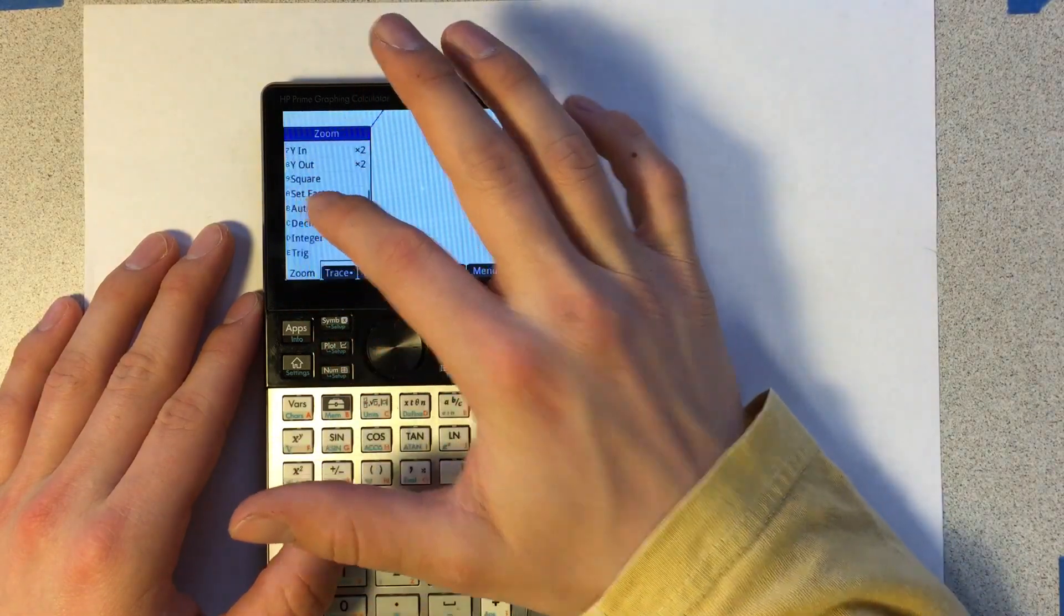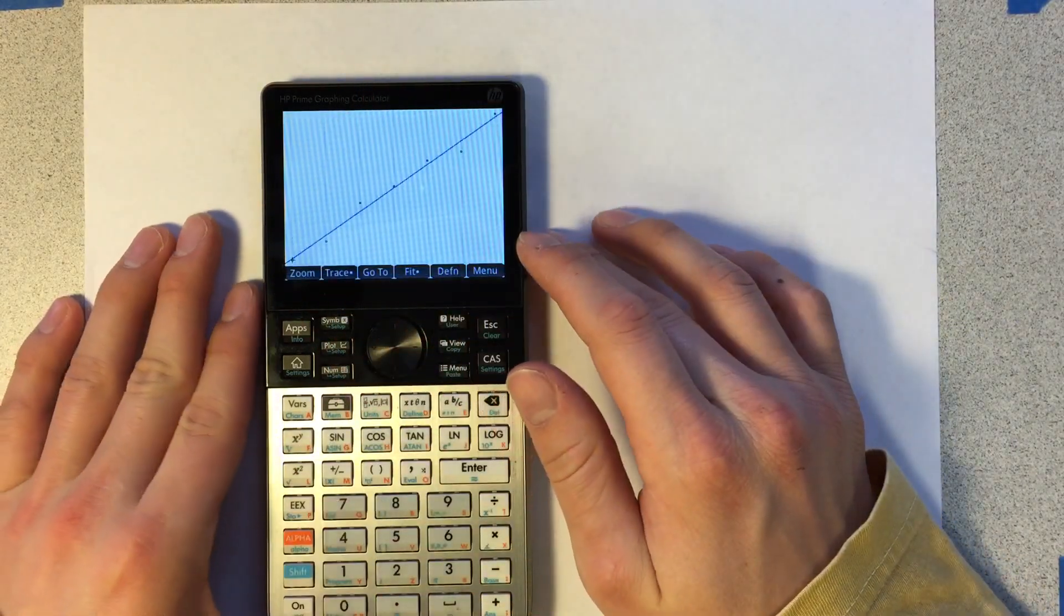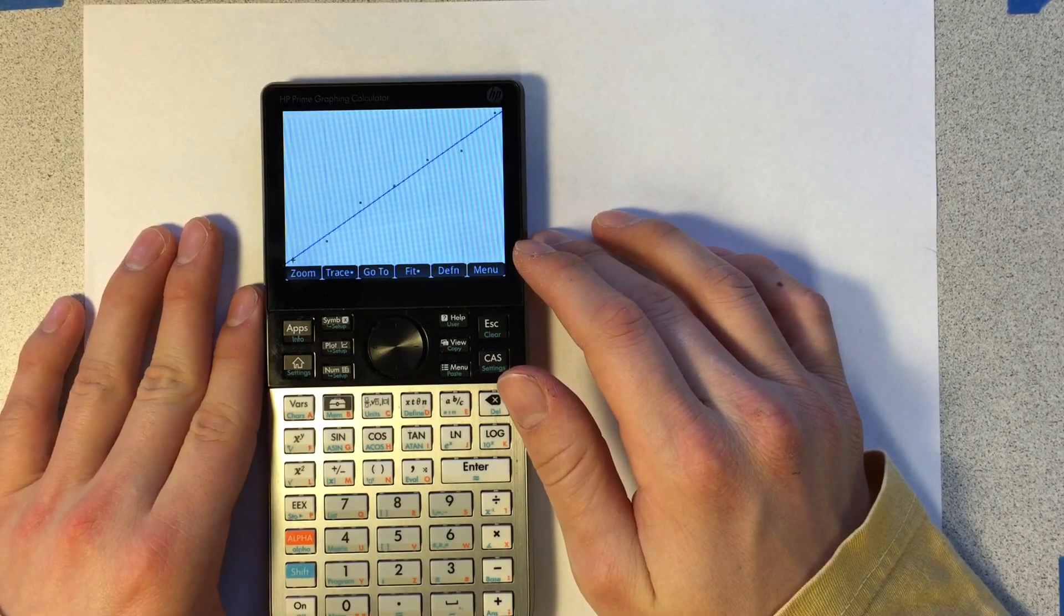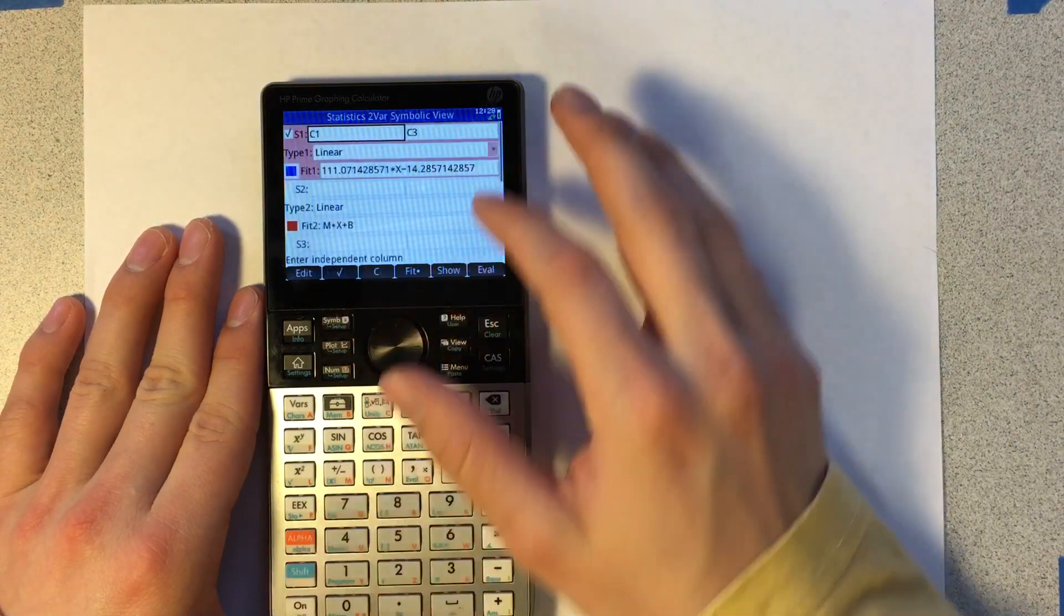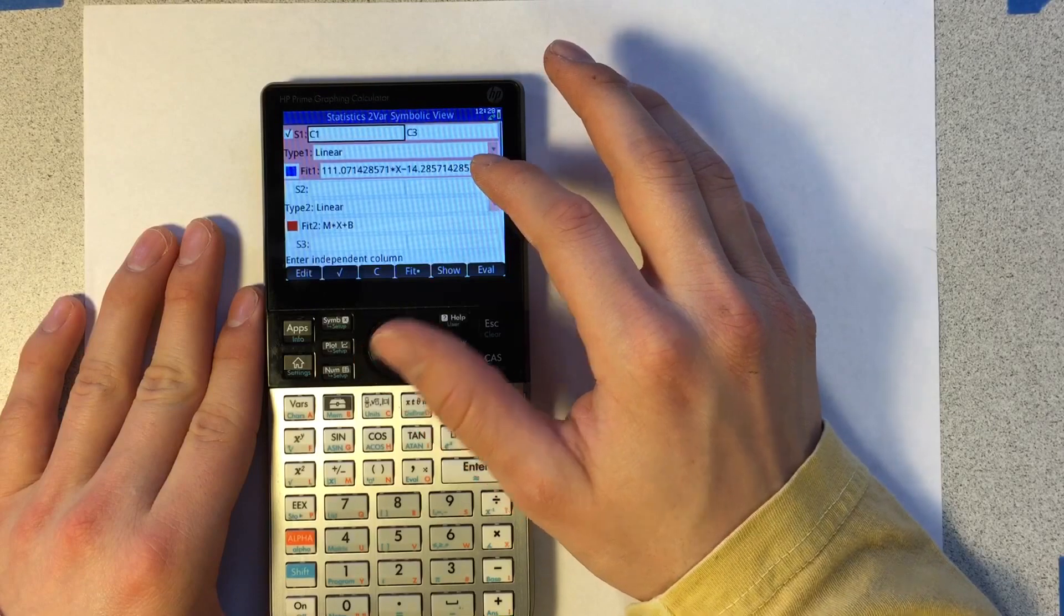Let's zoom to an auto scale so we can see all our data. So this is what the data looks like, now if I go back to here, I can see a curve fit.